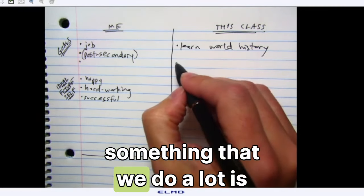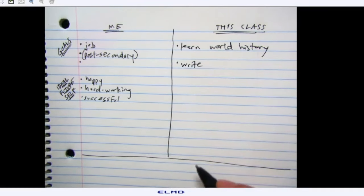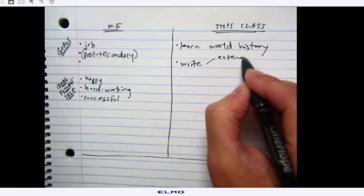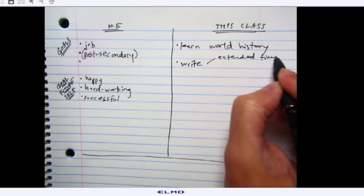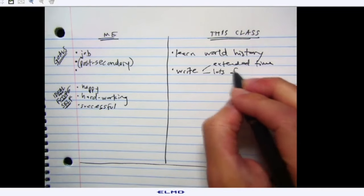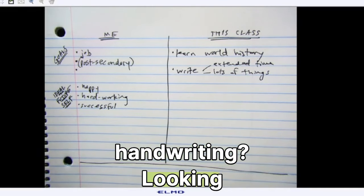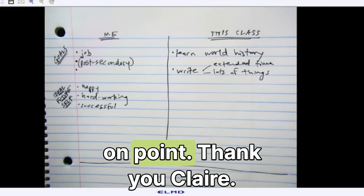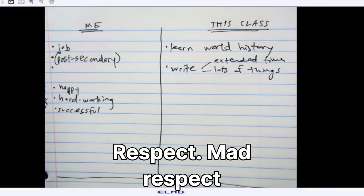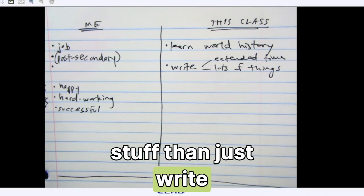But something that we do a lot is we write. We write for extended time. We write about lots of things. Claire, how's my handwriting looking? On point. Thank you, Claire. Appreciate that. Respect. Mad respect. All right, what else do we do a lot in this class? More stuff than just write.